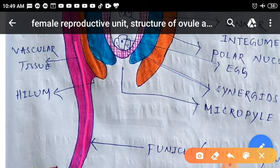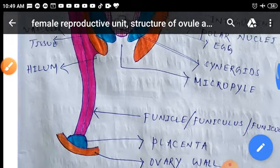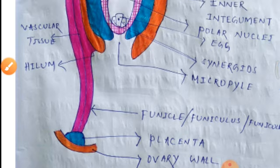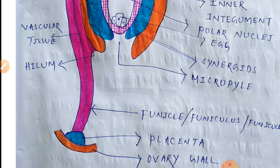Vascular tissue is present inside the funicle. The function of this vascular tissue is to transport food and nutrients from the placenta to the ovule through the funicle.